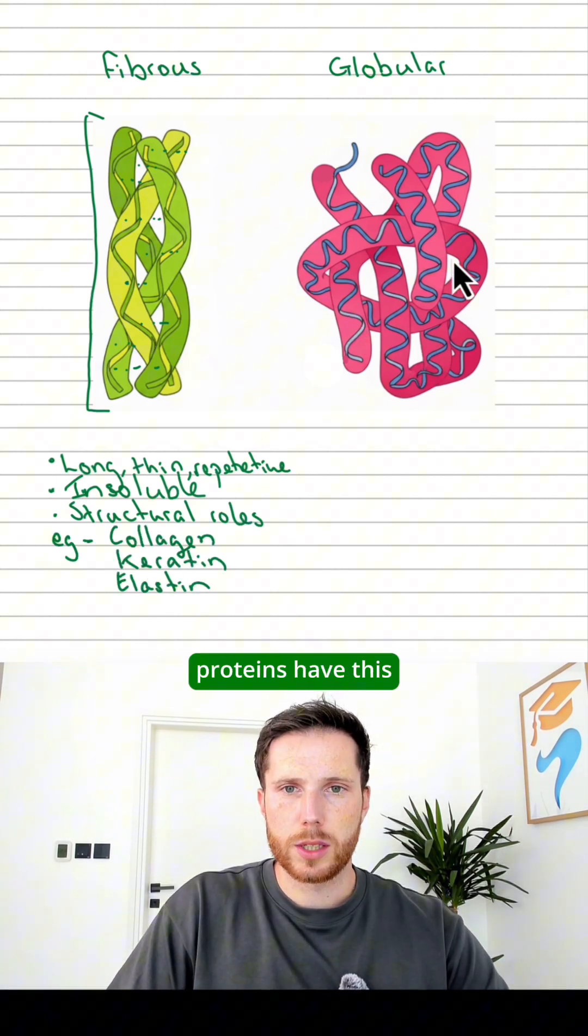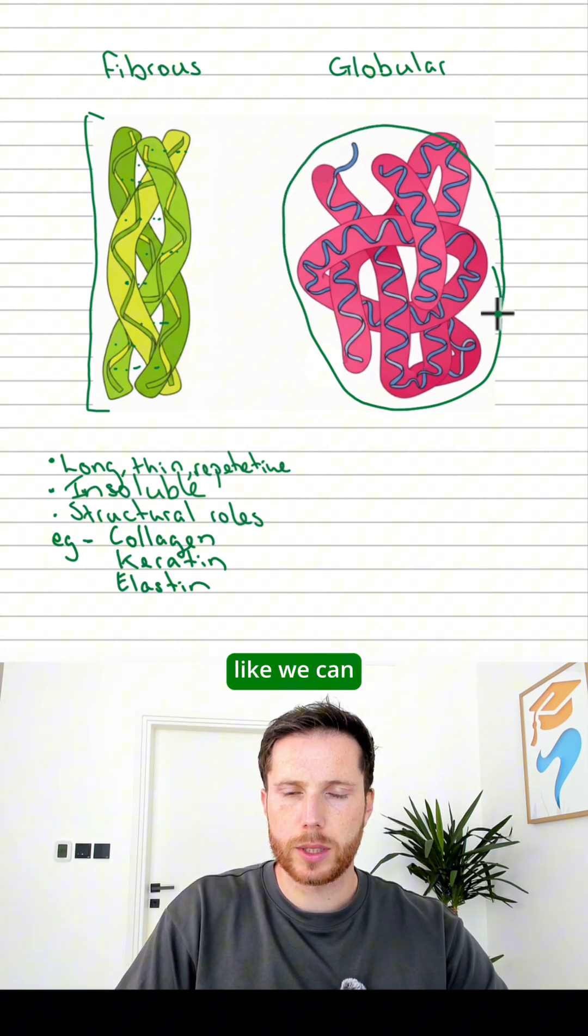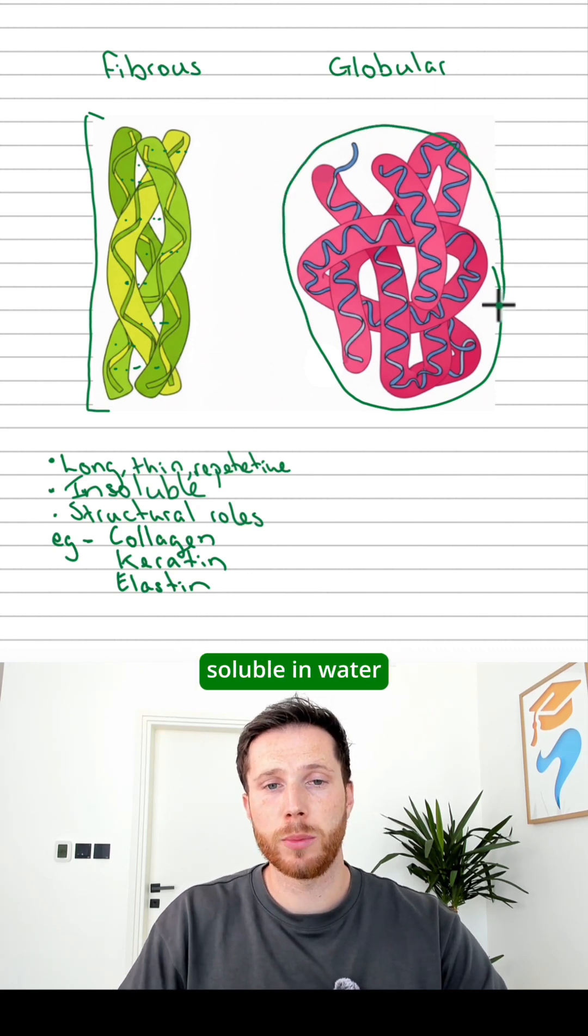Now globular proteins have this more rounded and compact shape, like we can see here, and they are soluble in water.